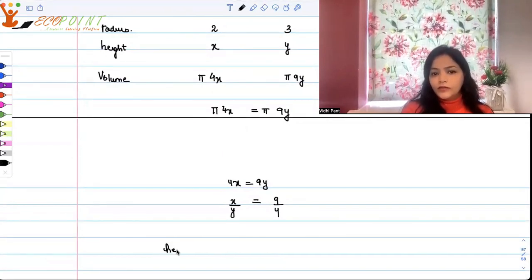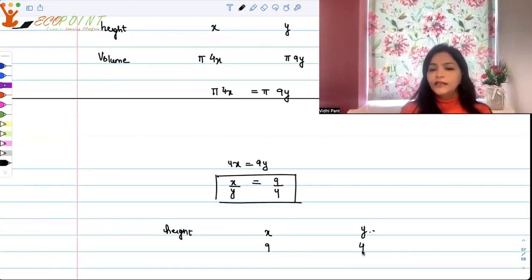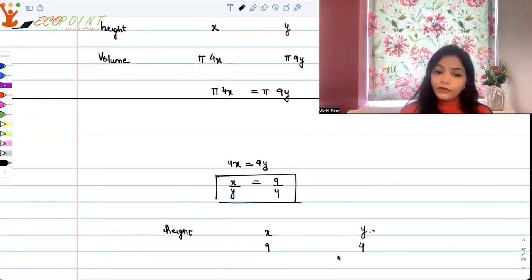In terms of height, initially it was x and then it was y. In terms of numbers, if this proportion is equal, I can say initially it was 9, then it is 4. So what is the percentage change? There is a change of 5.